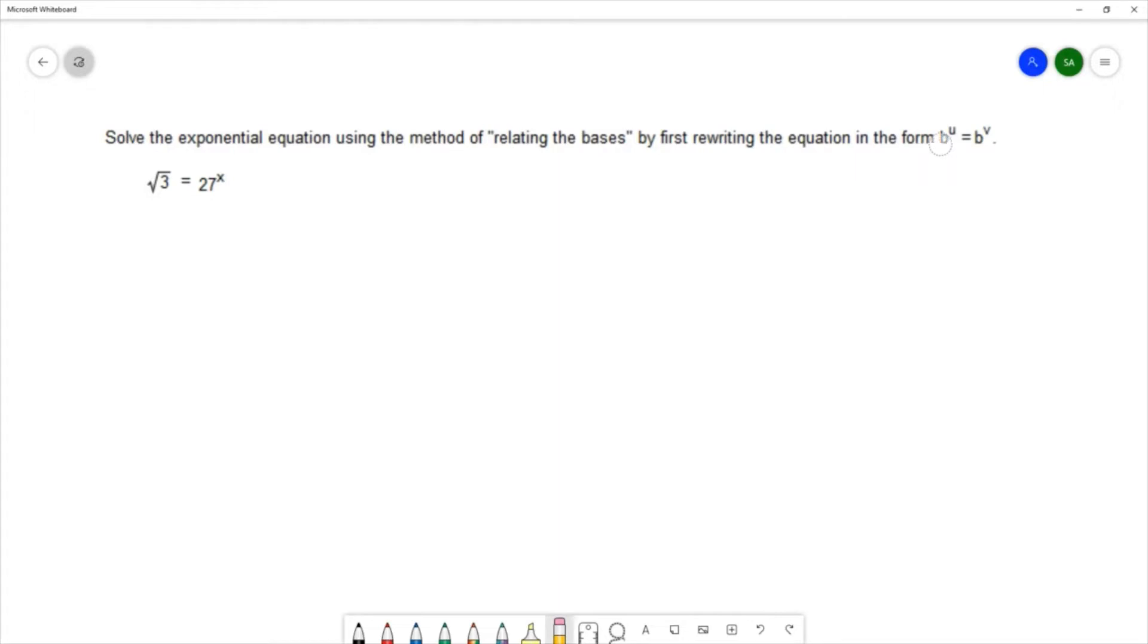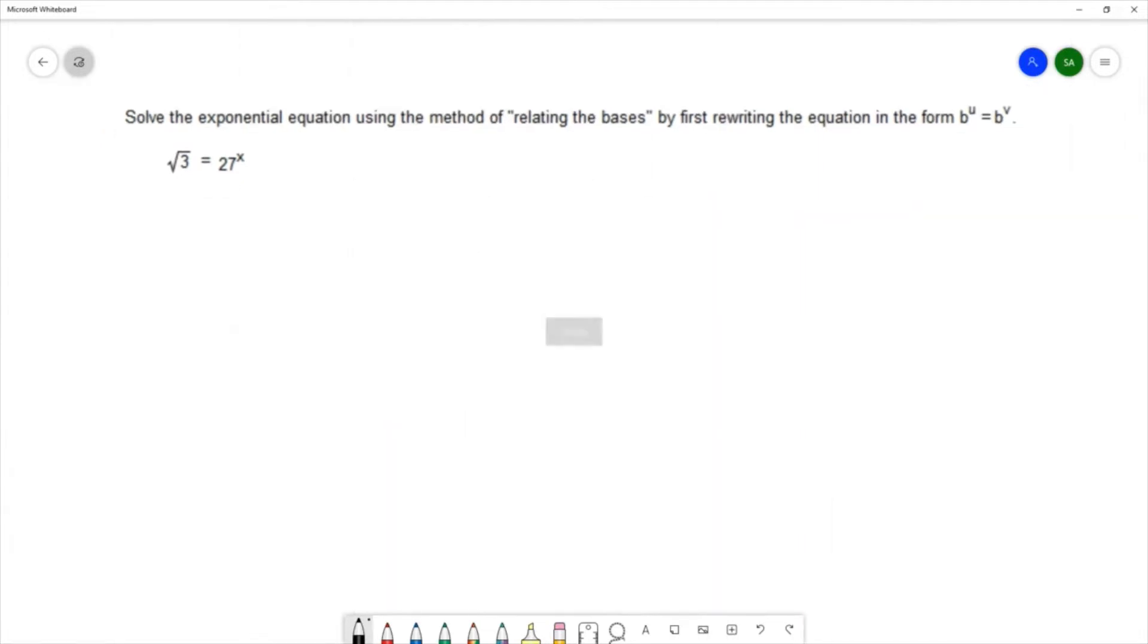Our goal is to rewrite our equation so that we have the same base on both sides. On the left hand side I've got square root of 3, and I can write square root of 3 as 3 to the 1 half power. That's writing that with a base of 3 and a power of 1 half.